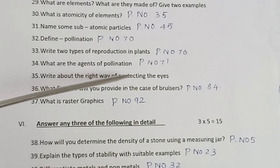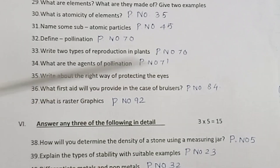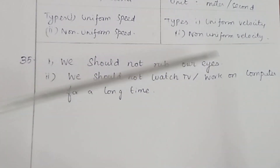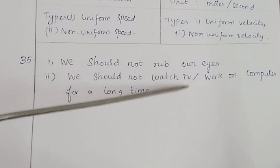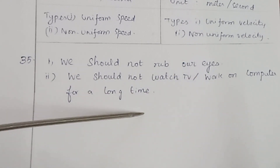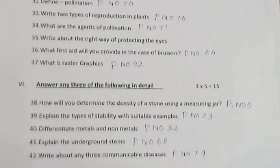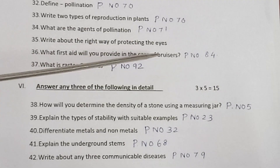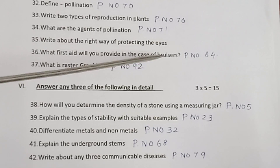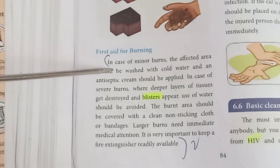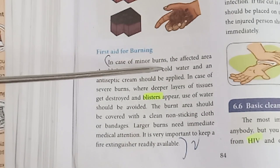Question 35: Write about the right way of protecting the eyes. We should not rub our eyes. We should not watch TV or work on computers for a long time.